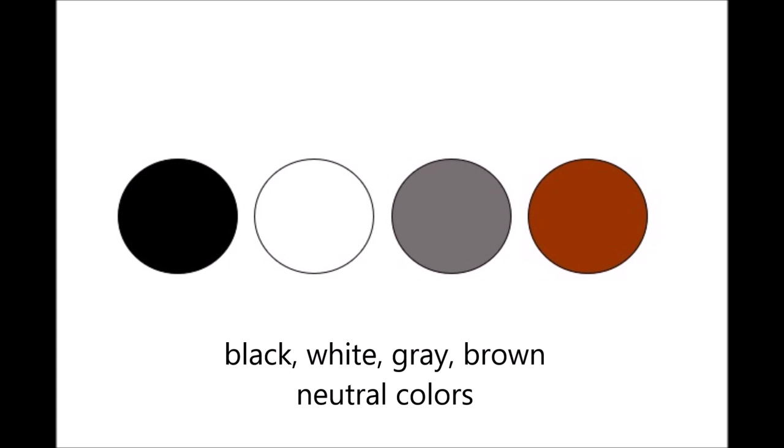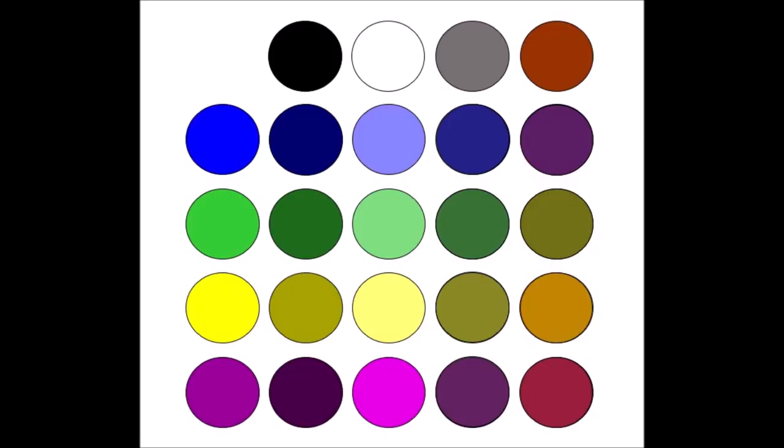Black, white, gray, and brown are called neutral colors. They are not found on the color wheel, but they are essential to color mixing because they allow you to create a myriad of new colors within a color scheme.